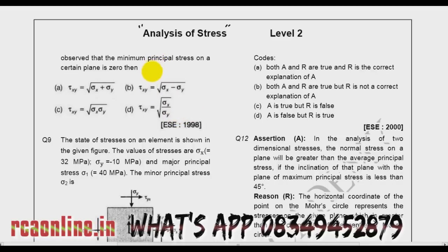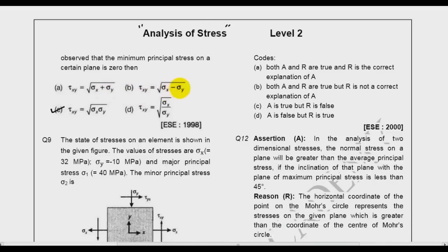Now friends, if you observe the answer without any calculation, as an engineer I can say that C is the right answer, because units are not matching in the other three options. I cannot have stress equal to root of stress plus stress, or stress equal to root of stress minus stress, or stress equal to root of stress divided by stress. The unit would be Newton per mm square, not root of Newton per mm square. So without any calculation you can say C is the right answer.